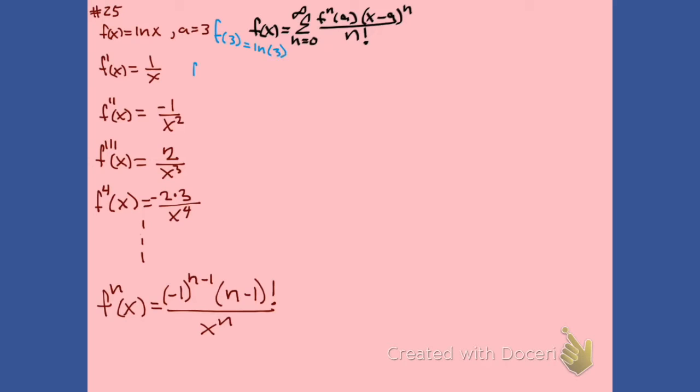Then we go and we evaluate this at three. We see our first term is the natural log of three. Our second is one third. Our third is minus one divided by three to the third. Our fourth is minus one times two times three divided by three to the fourth. And then our Nth derivative evaluated at three is minus one to the N minus one, N minus one factorial divided by three to the N.